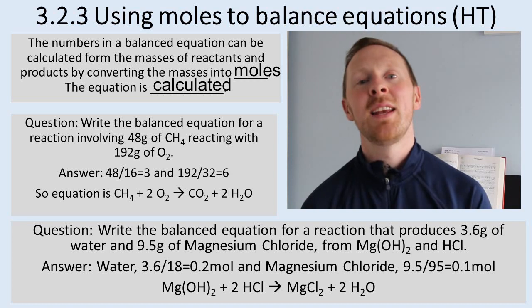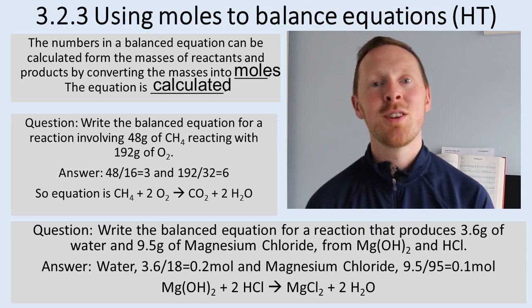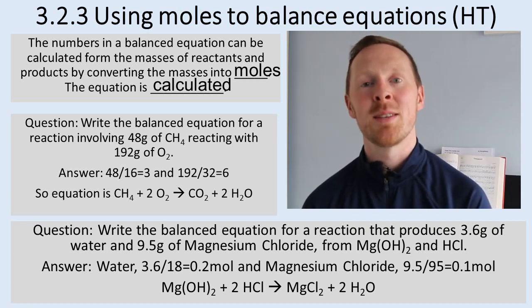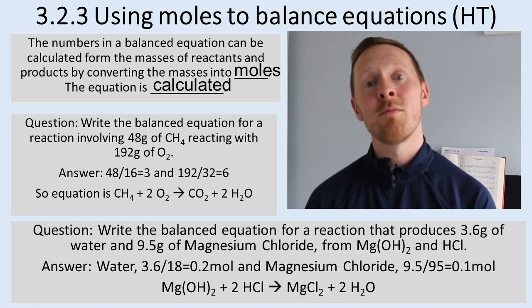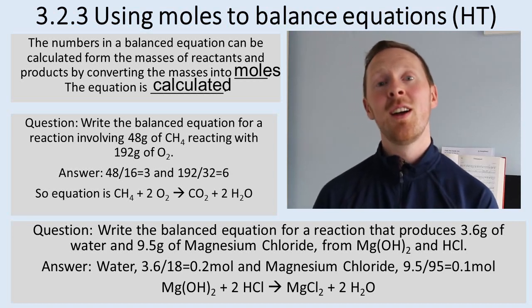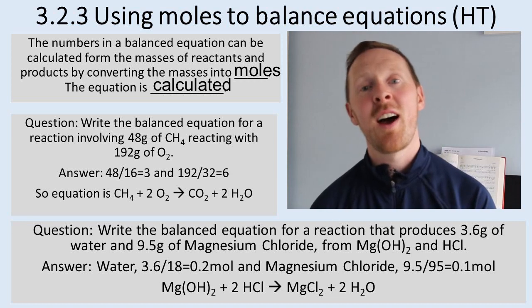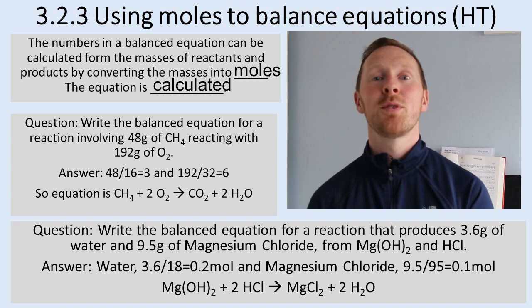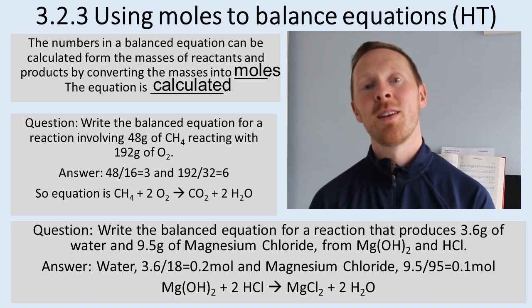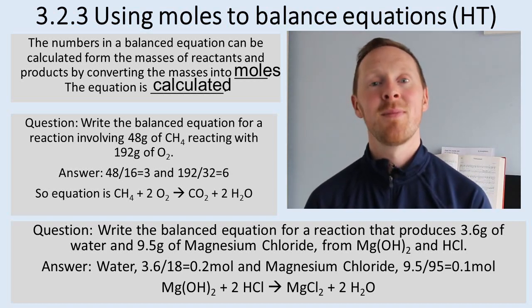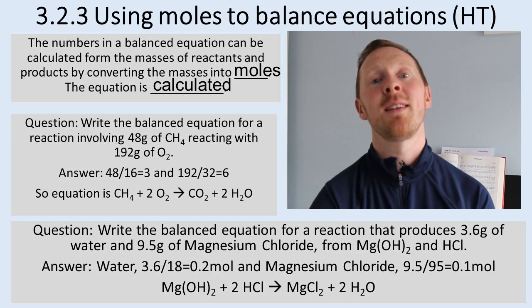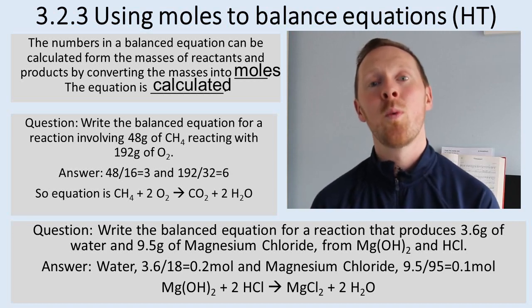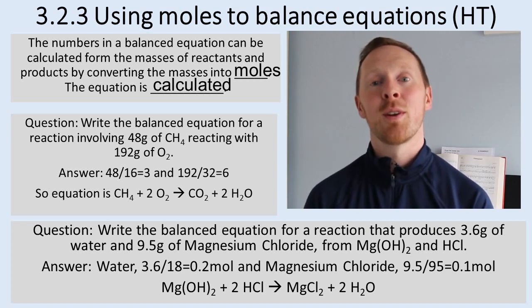Next we're going to work out the moles of magnesium chloride formed. We need to know the molecular mass of magnesium chloride first. Magnesium has a relative atomic mass of 24, chlorine is 35.5 but there's 2 of them. So 35.5 times 2 is 71 plus 24 is 95. To work out the number of moles you do the mass divided by the relative formula mass. So 9.5 grams divided by 95 is 0.1 moles of magnesium chloride formed.